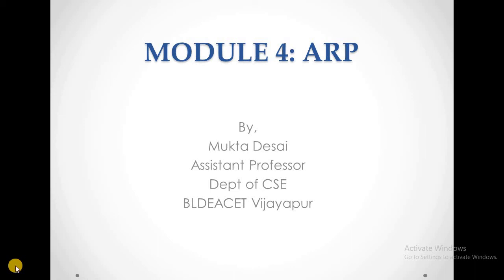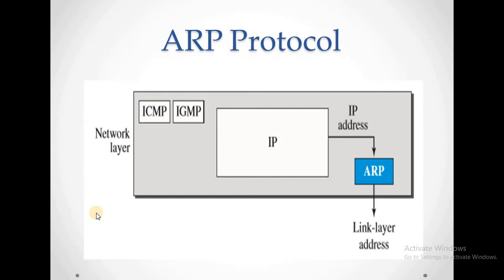Hello everyone. The topic of study here is ARP, that is Address Resolution Protocol. This protocol is found at the network layer in the TCP/IP protocol suite, but the main functionality can be found in the link layer. What ARP does is map an IP address to a logical link layer address — it accepts the IP address from the IP protocol, maps it to the corresponding link layer address, and passes that address to the data link layer.